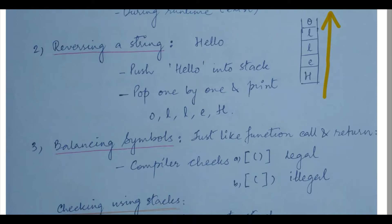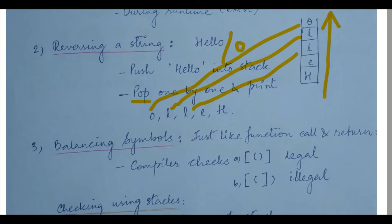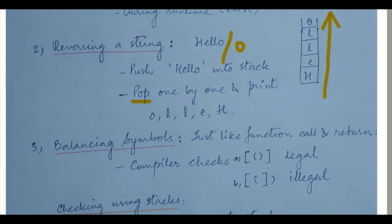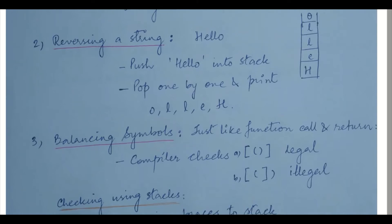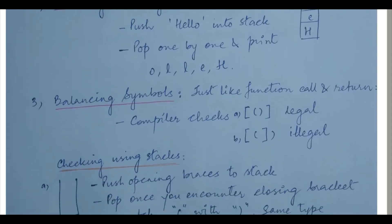Once the string ends — you hit the null at the end of the string — you pop one by one and print it. So you pop 'o' and print it, then pop 'l' and print it. You push 'hello' and pop it out in reverse direction. So if you have a string and a ready stack data structure, push everything onto it and pop everything out to get the reverse.